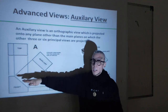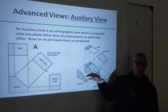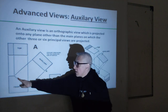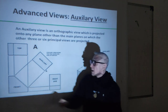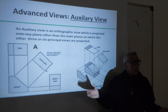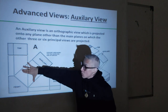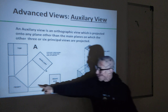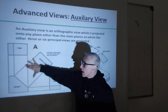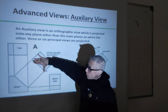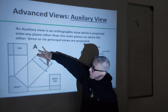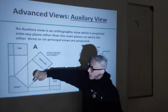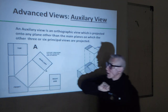This view - the auxiliary view - is projected on any other plane that is not part of the main planes. So it's not the vertical and not the horizontal. It depends on where this inclination, this inclined surface is located. That's where you will take the 90-degree line, and you project this surface as it is - its true measurement. From here to here is exactly from here to here.